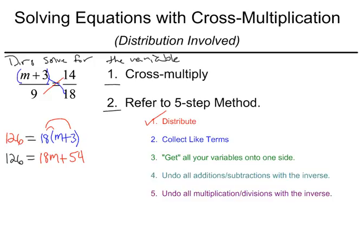Then I look to collect like terms. Well, that's not needed. Then I look to see if I can get all of my variables on one side of the equation. Well, that's not needed either because I have one variable of m and it is on one side.